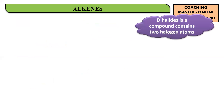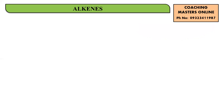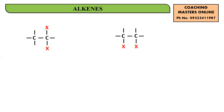Now let's talk about dihalides. What exactly do you mean by a dihalide? A dihalide is a compound which contains two halogen atoms. There are two possibilities: in the first case, both halogen groups are attached on the same carbon atom; in the second case, the two halogen groups are attached on two different but adjacent carbon atoms.